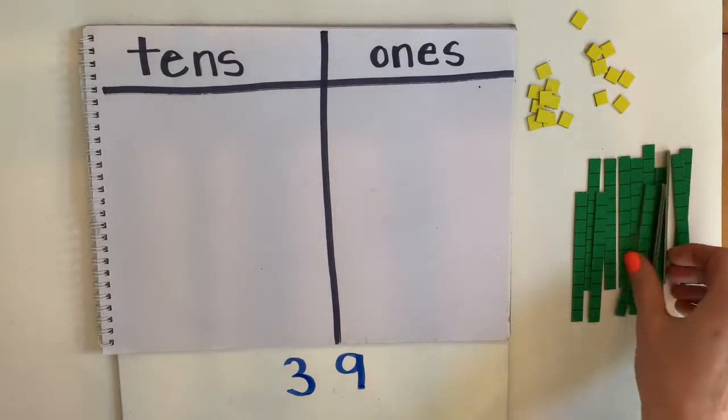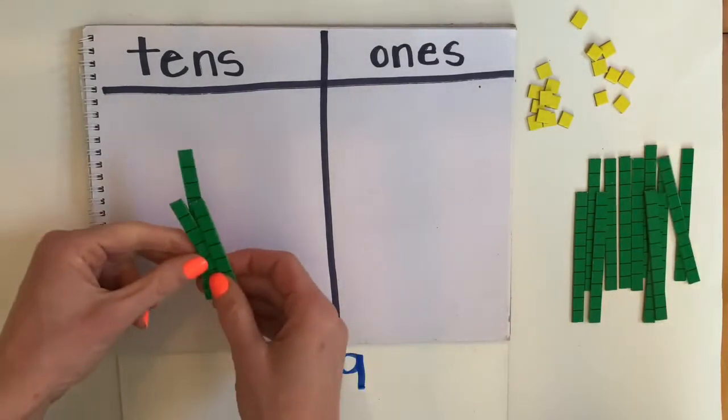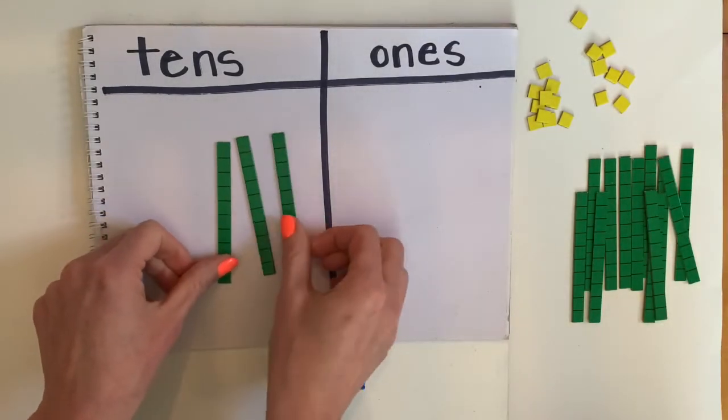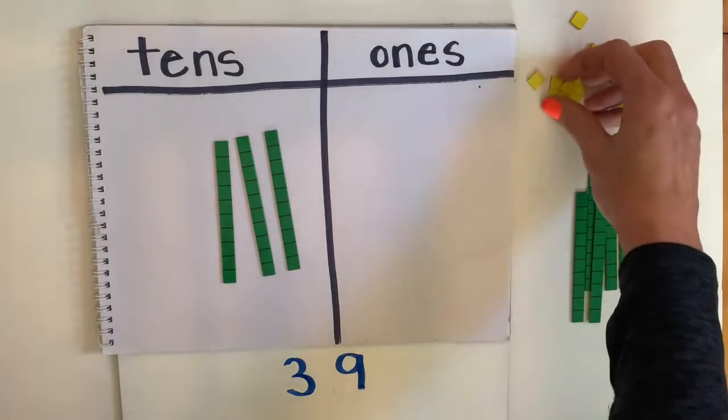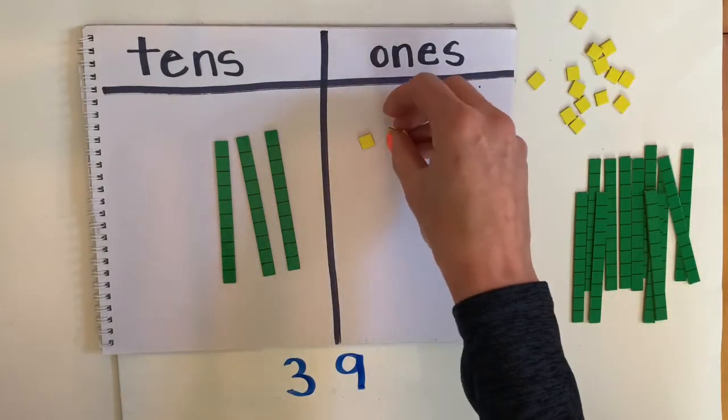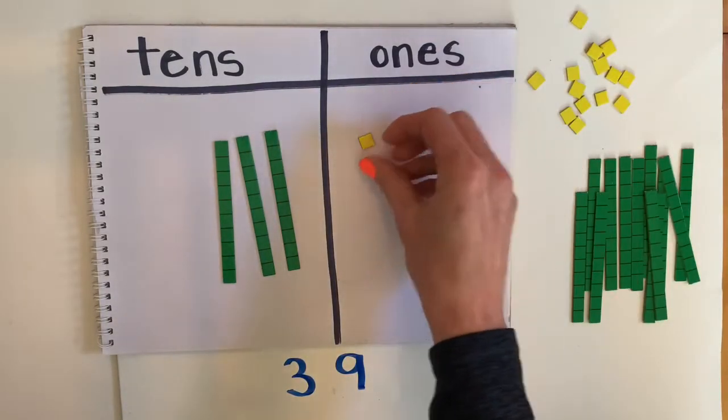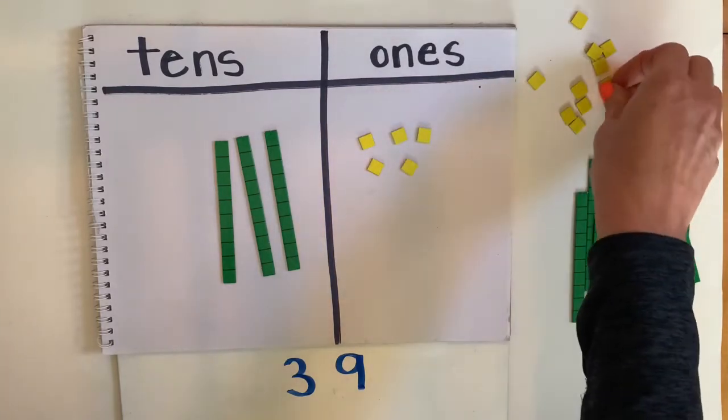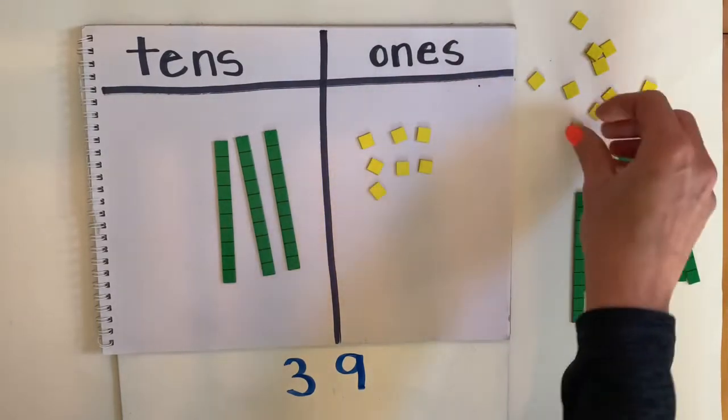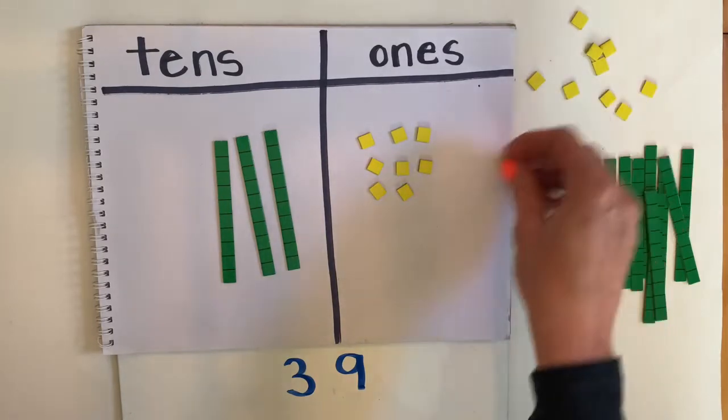Here we've got 39. So how many 10s? Three, 10, 20, 30. How many ones? Nine, 39. So 31, 32, 33, 34, 35, 36, 37, 38, 39.